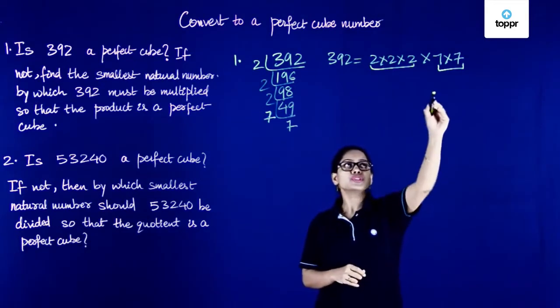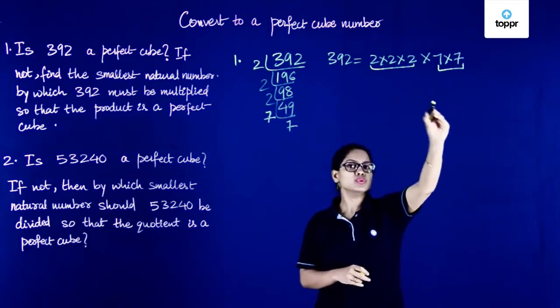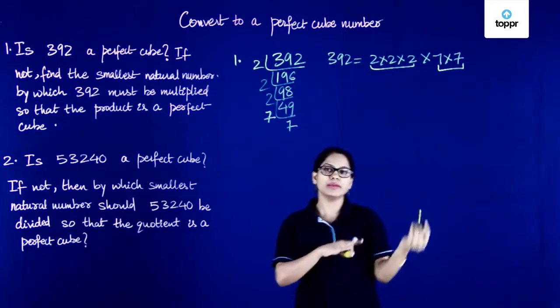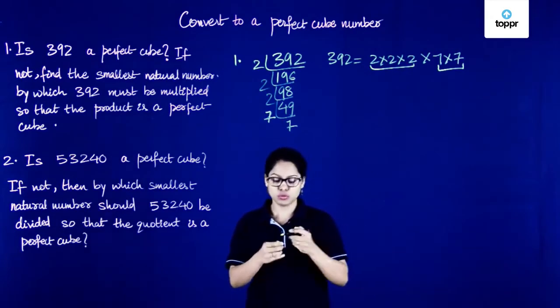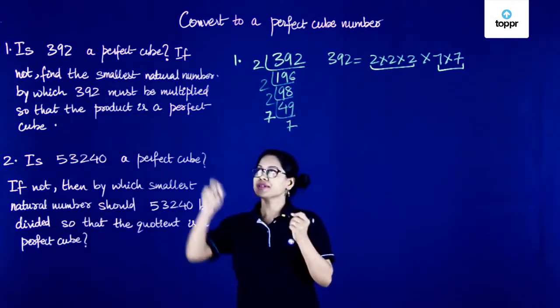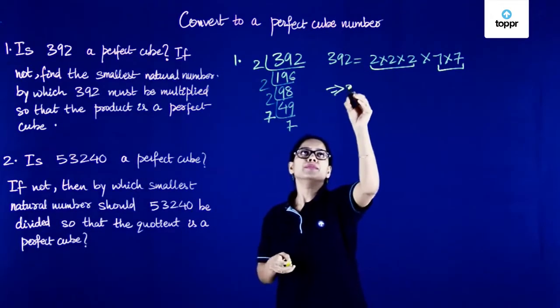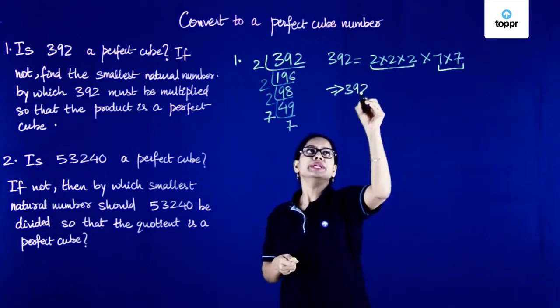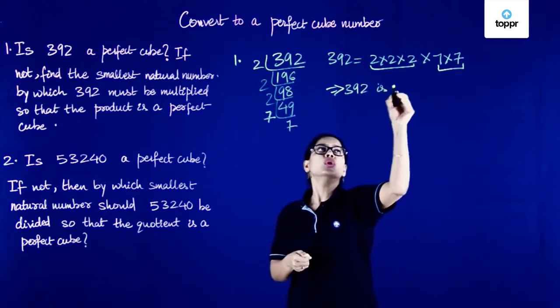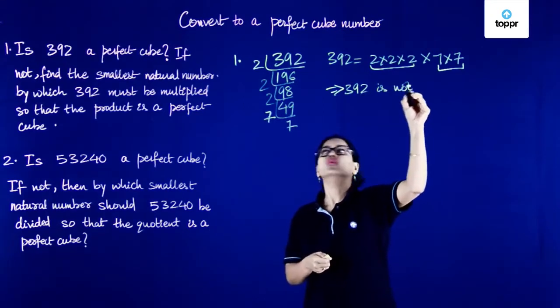Since we have only two 7's, this will not be a perfect cube. So that answers the first part of the question — 392 is not a perfect cube.